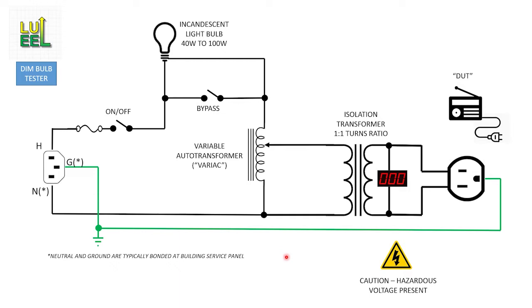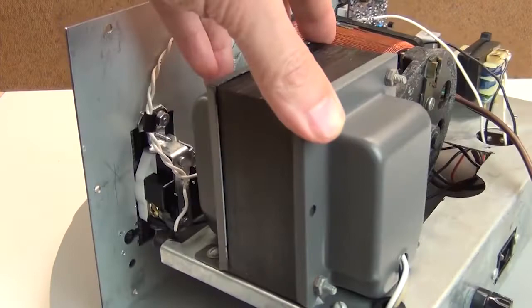So that's where the isolation transformer comes into play. It's a one-to-one turns ratio transformer and provides isolation for the DUT from the mains power.